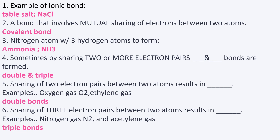The first term we're going to go over is ionic bond. An example of an ionic bond is table salt, or NaCl. NaCl is also known as sodium chloride. So if you see this question on the TEAS exam, you will remember that an ionic bond example is table salt and NaCl.